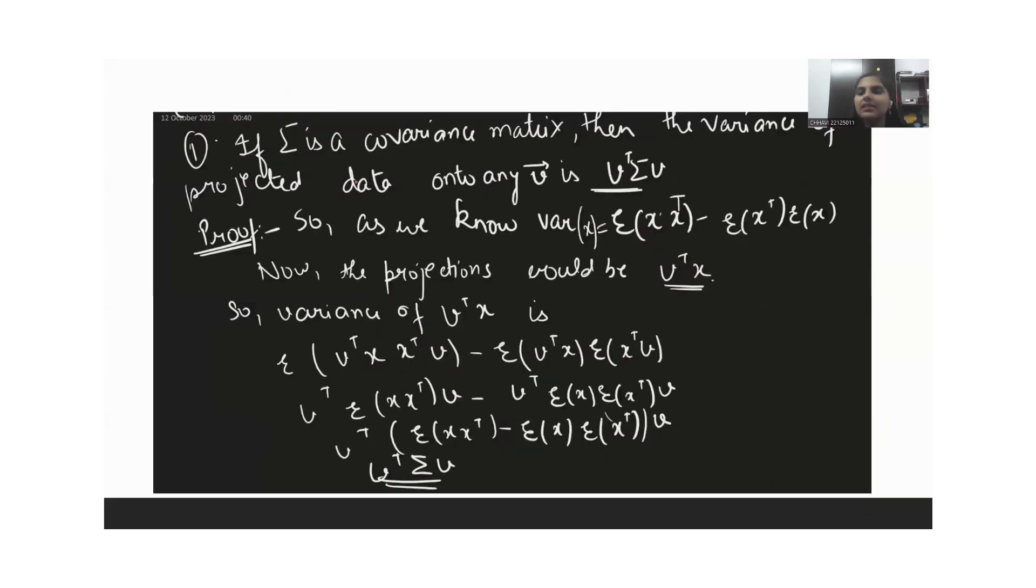So let's consider that Sigma is the covariance matrix. Then the variance of the projected data onto any V, that is, we consider a data set, a matrix X which contains all our data, and we found the vector V as our PC.